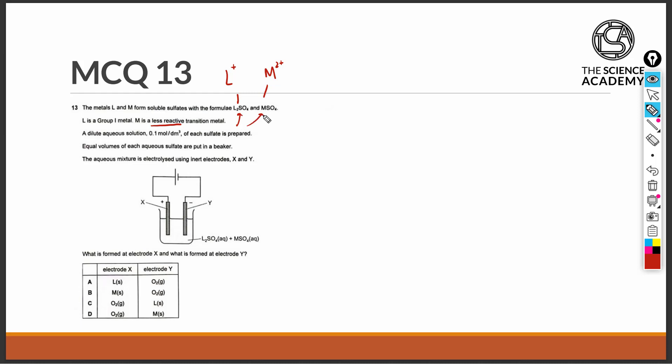Equal volumes of each aqueous sulfate are put in a beaker. The aqueous mixture is electrolyzed using inert electrodes X and Y. What is formed at electrodes X and Y?